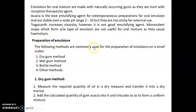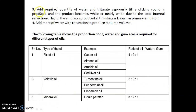The following methods are commonly used for preparation of emulsions on a small scale: dry gum method, wet gum method, bottle method, and other methods. In the dry gum method, first measure the required quantity of oil in a dry measure and transfer it into a dry mortar. Then add the calculated quantity of gum acacia and triturate to form a uniform mixture. Then add the required quantity of water and triturate vigorously until a clicking sound is produced and the product becomes white or nearly white due to total internal reflection of light. The emulsion produced at this stage is known as the primary emulsion.